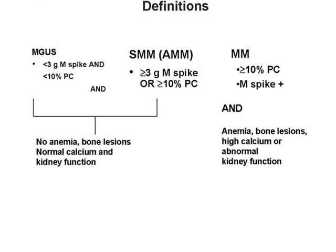From left to right, this represents a spectrum — possibly the same disease. On the left is a more benign version; on the right is full-blown malignant multiple myeloma. Normal plasma cells in the bone marrow are about 5% or less; 10% or more is considered myeloma. MGUS is defined as less than 10% plasma cells on bone marrow biopsy, a monoclonal spike less than 3 grams per deciliter, no clinical consequences, no bone lesions, no anemia, no hypercalcemia, and no end-organ damage.